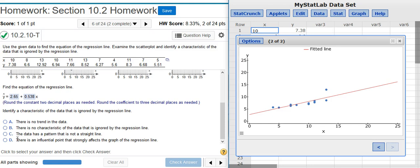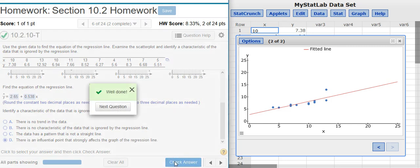The next answer option says the data has a pattern that is not a straight line. Well, most of the data here conforms to your straight line regression line. So, that's obviously not true. The last option here says there's an influential point that strongly affects the graph of the regression line. That's definitely true. Look at this outlier point right here. If we didn't have this outlier point, this regression line would dip down a little bit and would better fit the data that we have here in our data set. So, this is the answer we're going to want to select. Well done!